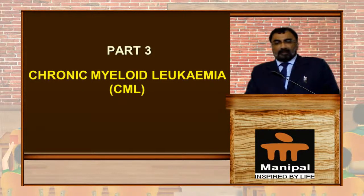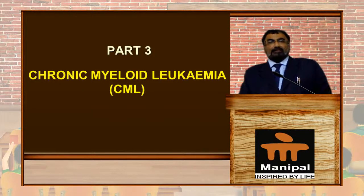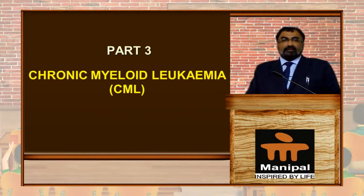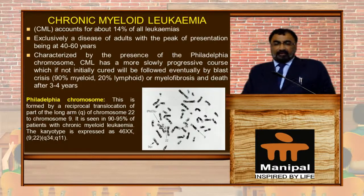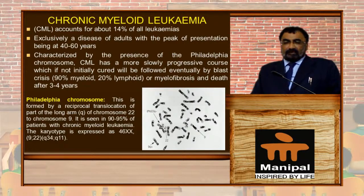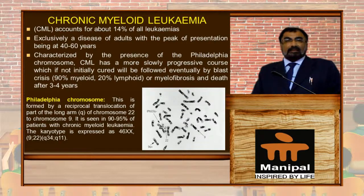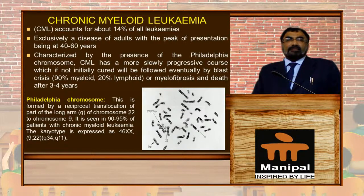Dear students, let us come to Part 3 of this discussion of leukemia — chronic myeloid leukemia. This is a very important subject. Chronic myeloid leukemia accounts for about 14% of all leukemias, and is exclusively a disease of adults, with a peak presentation between 40 to 60 years of age.